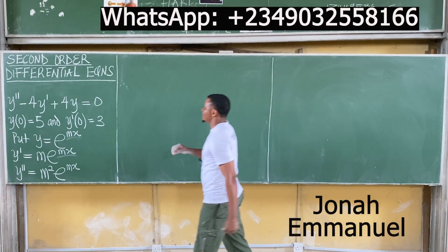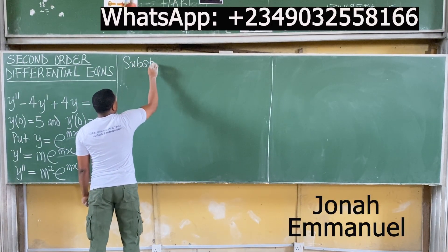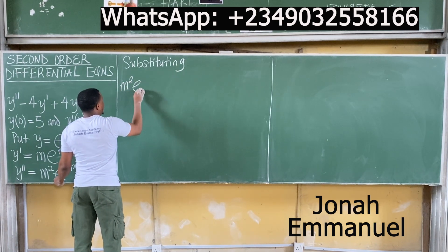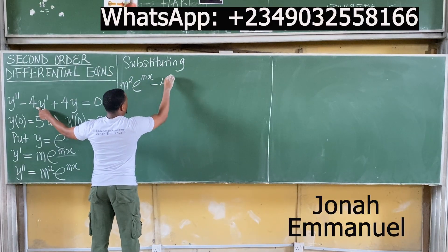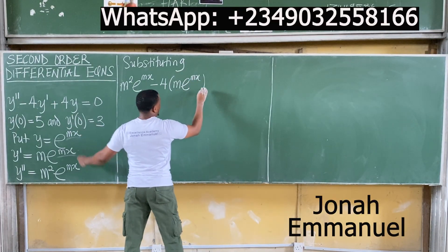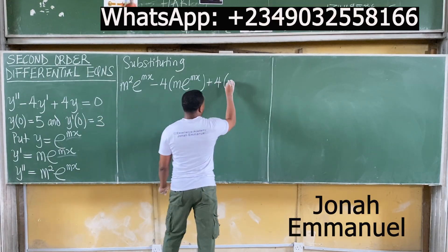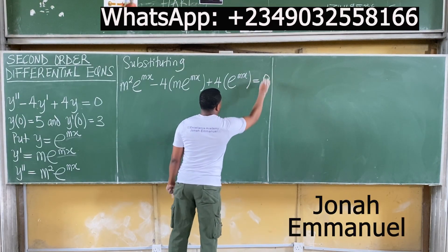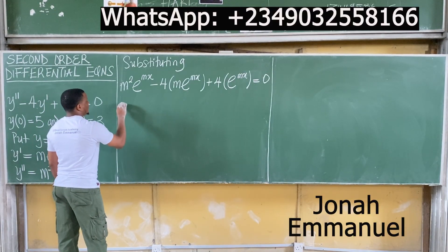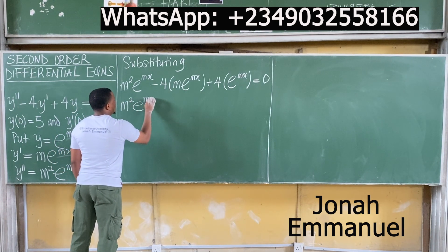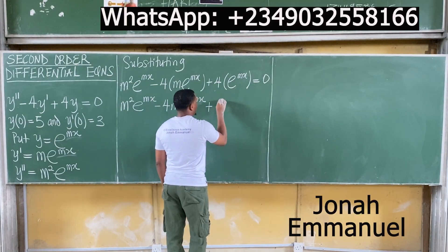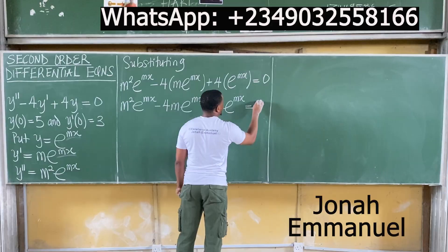Next task: substitute. Substituting, starting from y double prime, you have m²·e^(mx) minus 4 times y prime, which is m·e^(mx), plus 4 times y, where y is e^(mx), all equal to 0. Expanding this: m²·e^(mx) minus 4m·e^(mx) plus 4·e^(mx) equals 0.